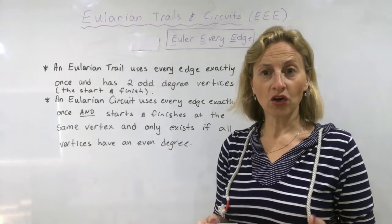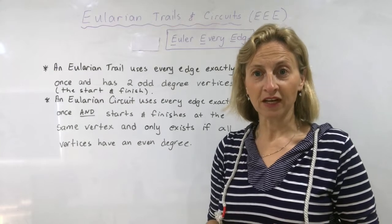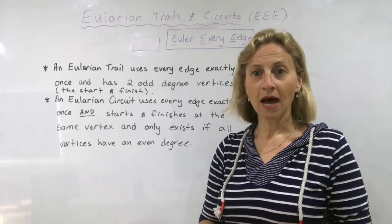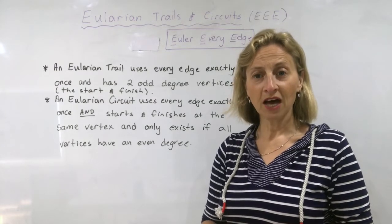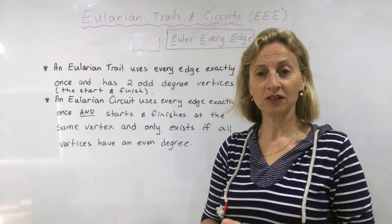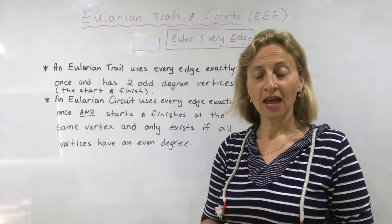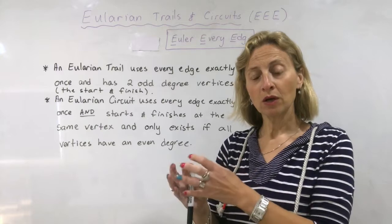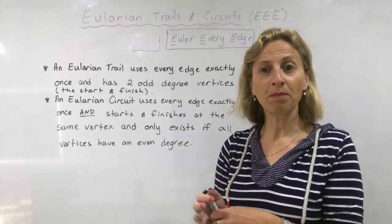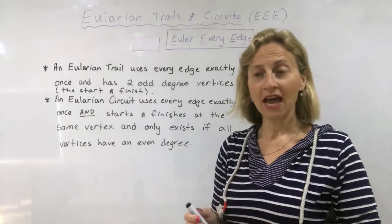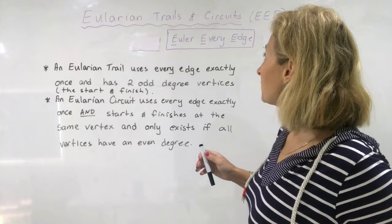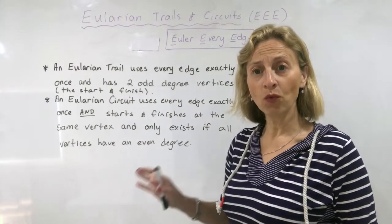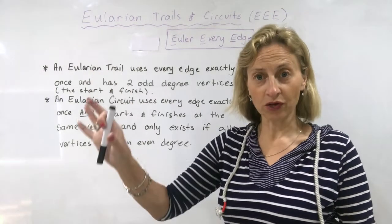Moving straight along from the different types of traveling, we know that we have a walk, a path, a circuit, a trail, and a cycle. I organized them into pairs really, where the path and the cycle were together, the trail and the circuit were together, and the walk is on its own.